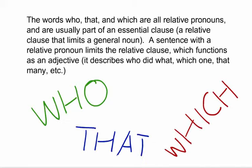Now first of all, let's talk about the words. The words who, that, and which are all relative pronouns and are usually part of an essential clause, a relative clause that limits a general noun. A sentence with a relative pronoun limits the relative clause, which functions as an adjective. It describes who did what, which one, that many, etc.